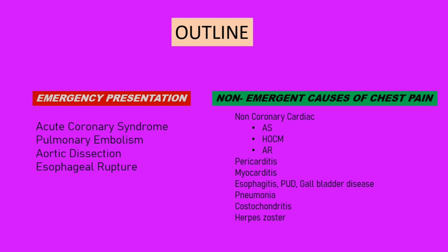Chest pain of pericarditis increases in the supine position and may be associated with a friction rub. Stress cardiomyopathy presents in a similar manner as acute coronary syndrome. Chest pain accompanied by a painful tympanic abdomen may indicate a potentially life-threatening gastrointestinal etiology such as esophageal rupture. Pneumonia may cause localized pleuritic chest pain with a friction rub. Pneumothorax may be accompanied by pleuritic chest pain and unilateral absence of breath sounds. Tenderness to palpation of the costochondral joints may indicate a musculoskeletal cause. Herpes zoster produces a painful rash in a dermatomal distribution.